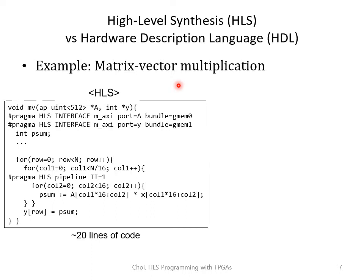Let me show you a sample HLS code. This is a matrix-vector multiplication code — we are multiplying matrix A and vector X and producing vector Y. These two loops are just regular C code for matrix-vector multiplication: one loop on the row and one on the column. In HLS, you can keep this original loop structure. If you want additional optimization, you can simply insert a pragma and the HLS tool will perform that optimization for you.